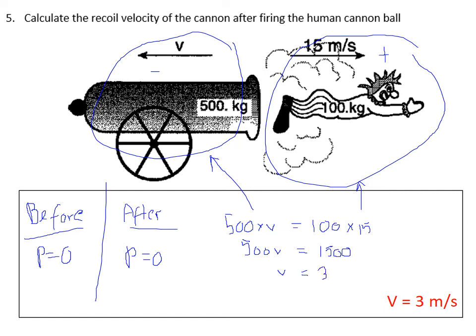Therefore v must be three, because three 500s make 1500. Now before we move on though, it's not just simply three - the direction is important. So it's actually minus three because the gun recoils backwards. So v equals minus three because it's a vector and it's going backwards.